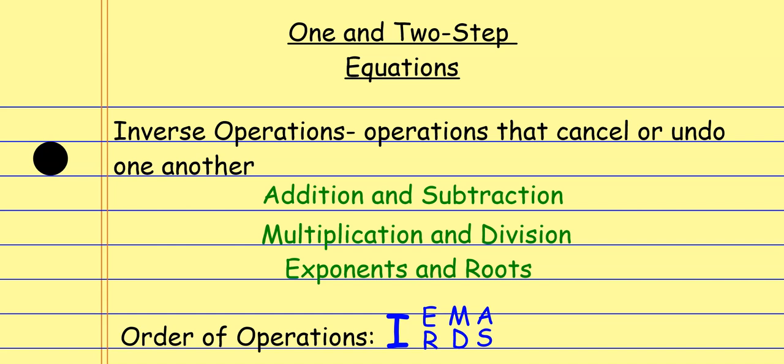Think about it from the perspective of addition and subtraction: subtracting two is the same as adding negative two. Subtraction is just a special kind of addition — the opposite version. Same thing with multiplication and division: dividing by two is the same as multiplying by one half. Division is just a special case of multiplication, the opposite version. And we'll see that with exponents and roots at some point as well.